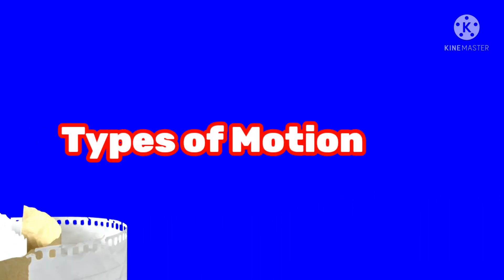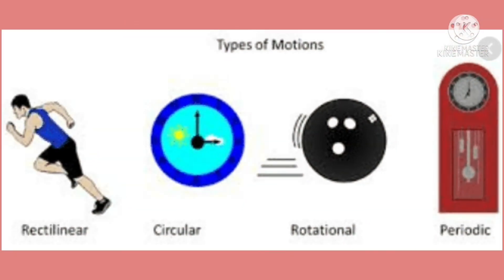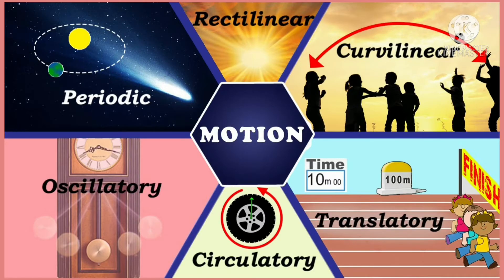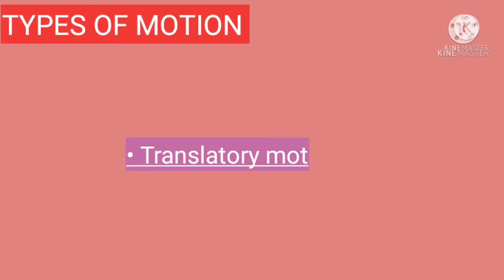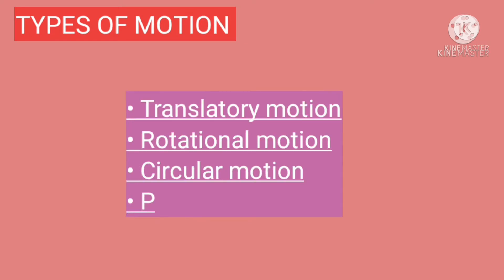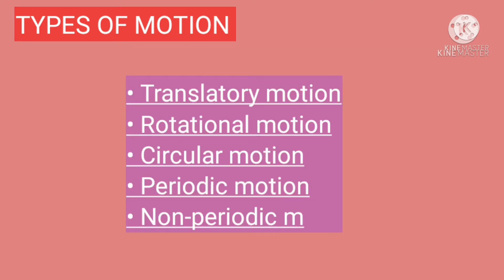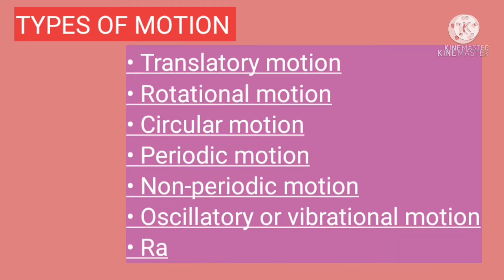Greetings of the day. Today we will learn about different types of motion. Different objects show different types of motions. These different types of motion can be divided into the following categories: translatory motion, rotational motion, circular motion, periodic motion, non-periodic motion, oscillatory motion or vibrational motion, and random motion. Now let us study each type of motion in detail.